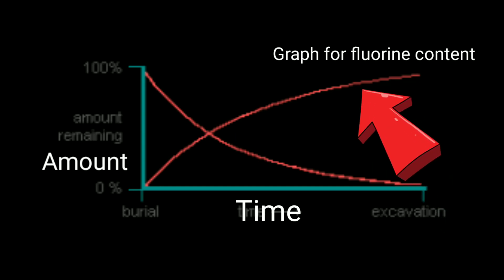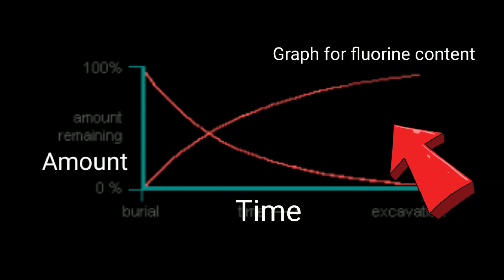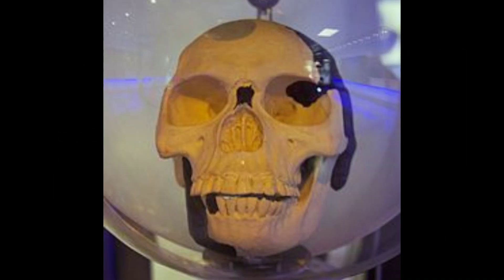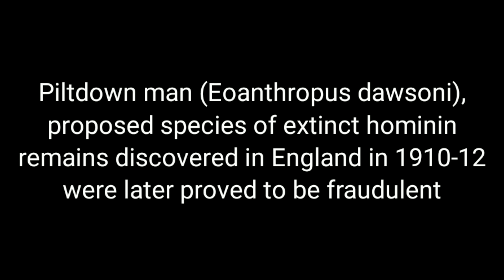Older bones have more fluorine. This test was used to identify that the Piltdown Man was a fraud. The Piltdown Man was a paleoanthropological hoax in which bone fragments were presented as fossilized remains of a previously unknown early human. The falsity of the hoax was demonstrated in 1953.